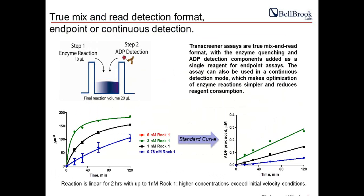For today's purpose, the ability of the Transcreener assay to be run in kinetic mode is what makes detection of residence time possible. You run your enzyme reaction, add your detection mixture — tracer and antibody — at time zero, and read the plate continuously. This simplifies optimization of enzyme reactions and assay development, reduces reagent consumption, and allows the detection mixture to be pre-mixed and stored for long periods through an eight-hour day at room temperature or four degrees.